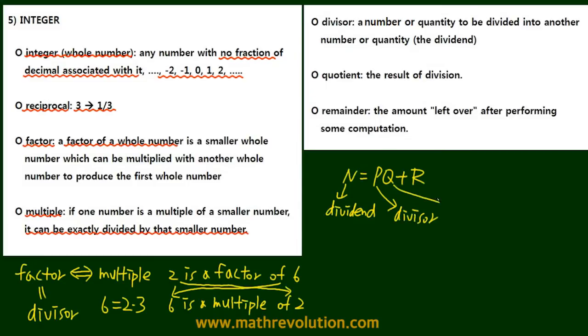Q is the quotient, the result of division, and R is the remainder, the amount left over after a division.